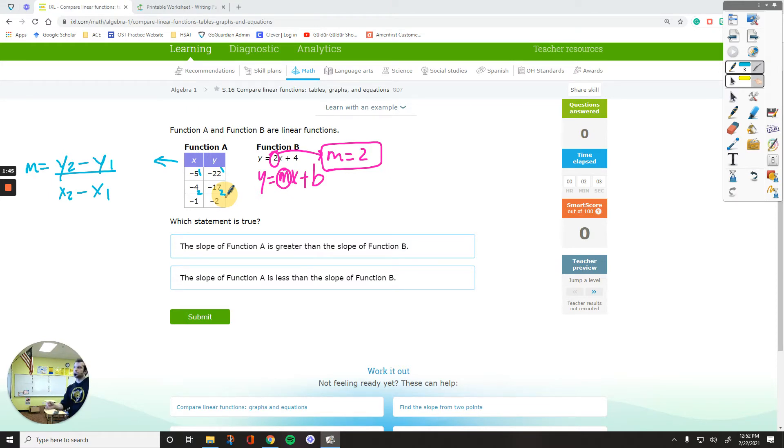You will just plug the numbers in. So y2 is negative 17 minus y1 is negative 22, divided by x2 is negative 4 minus x1 is negative 5. So if you subtract the numbers in the numerator, it gives you positive 5. The numbers in the denominator gives you positive 1. Divide 5 by 1, the answer is 5.